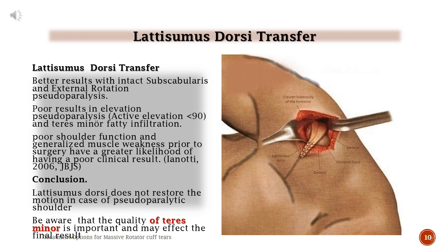Poor shoulder function and generalized muscle weakness prior to surgery carry a greater likelihood of poor clinical results (Iannotti, 2006, JBJS). Conclusion: latissimus dorsi does not restore motion in cases of pseudoparalytic shoulder. Be aware that the quality of teres minor is important and may affect the final result.